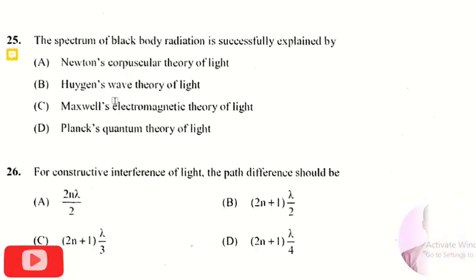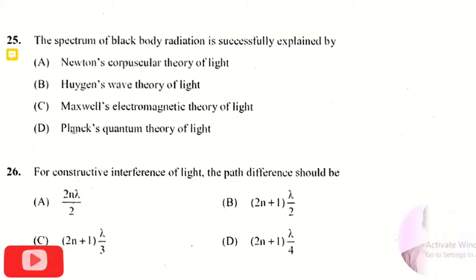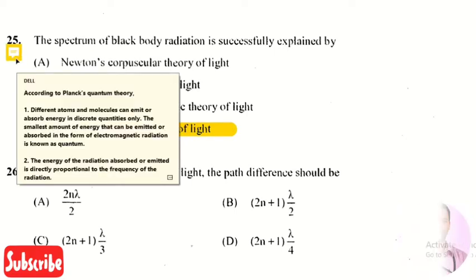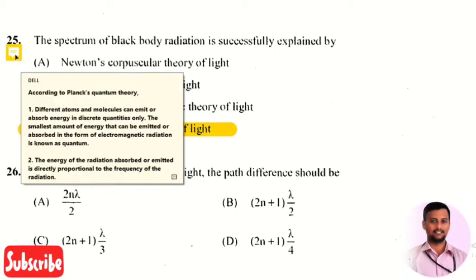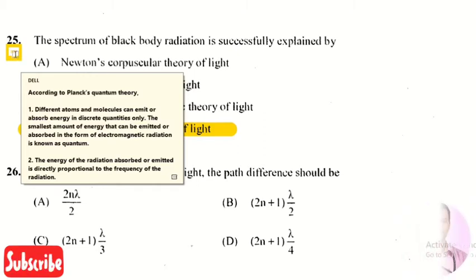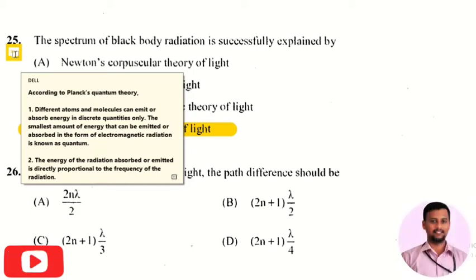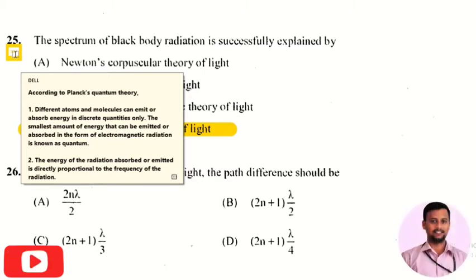The next question is: the spectrum of black body radiation is successfully explained by — the right answer is option 4, that is Planck's quantum theory of light. According to Planck's quantum theory, different atoms and molecules can emit or absorb energy in discrete quantities only, and the smallest amount of energy that can be emitted or absorbed in the form of electromagnetic radiation is known as a quantum.